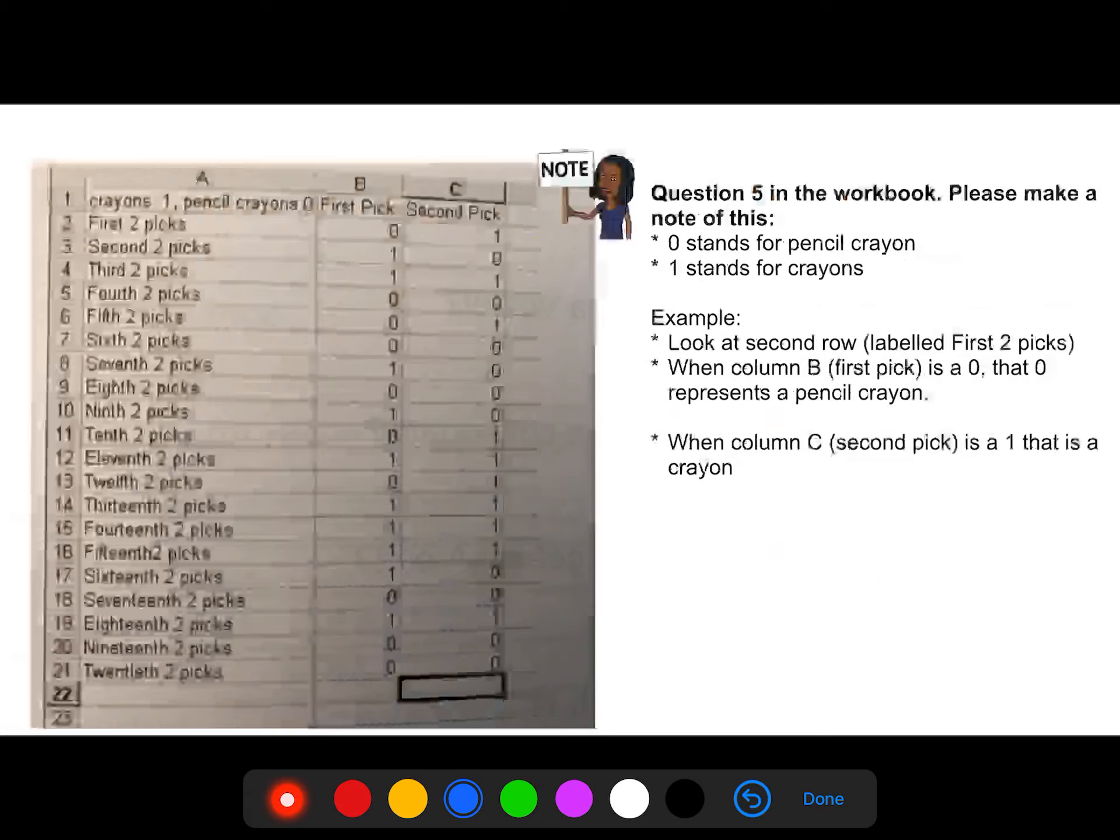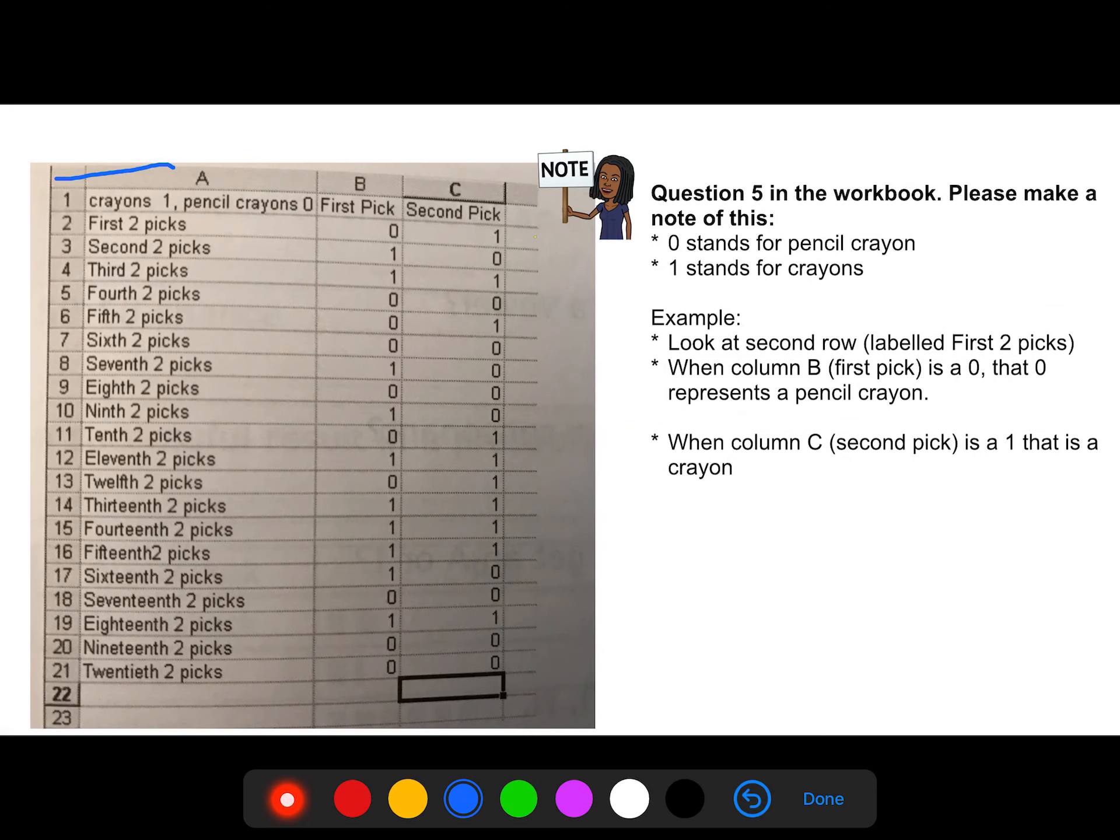Please make a note of this. This is question five in your workbook. I want to make sure I get these questions out of the way. So it's very similar to what we just did. It looks at zero, this is the chart that's from the book right over here. It looks at zero is for pencil crayon. One is for crayon, just regular wax crayon. So when you look at it, you have to pick from a bag. You're just choosing from a bag. From row two all the way down, you have first pick, second, third, fourth, and so on. They do 20 picks, 20 trials. So the first two picks. So let's look at row two. The second row labeled first two picks. When column B is first pick, it's a zero. That zero represents pencil crayon. The second pick is crayon. So that's what it stands for. So it's very similar to what we just did.